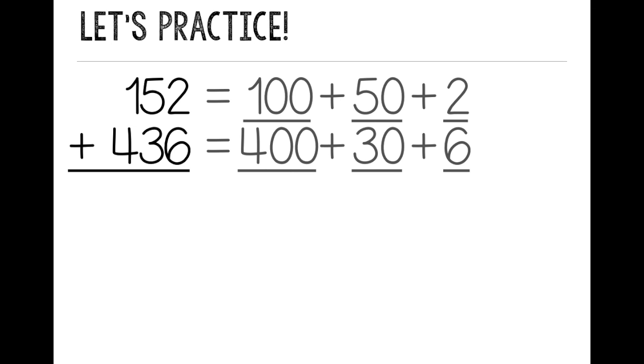Now I want to add each place value. So I'm going to start with my ones place, the 2 and the 6. And I add 2 plus 6 equals 8. Then I'm going to add my tens. 50 plus 30 equals 80. Then I add my hundreds. 100 plus 400 equals 500. So I have 500 plus 80 plus 8.